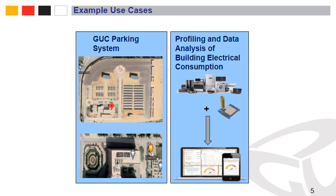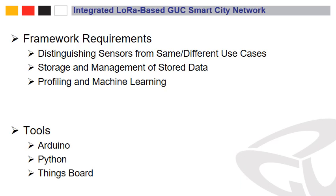Another example application is a GUC smart parking system, where parking sensors are deployed in the parking area next to Gate 5. These sensors count the number of cars in the parking area, and the status is sent to the gateway and back to the server as part of the GUC parking system. These are just two example use cases, but we can implement many more.